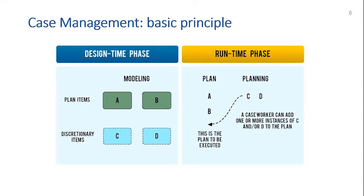The basic principle of case management is that at design time, when you conceive how you're going to manage cases, you define tasks as plan items. A and B are tasks you will always do. On top of that, you can add discretionary items — possible activities that you might want to do but that will not always happen. At runtime, you create a plan with activities A and B, and then the case worker, depending on the case's characteristics, can add C, D, or both to the plan.